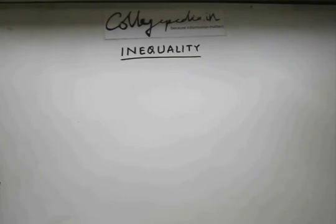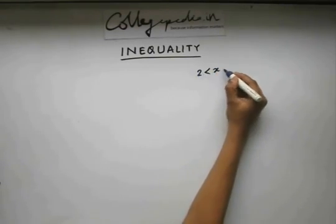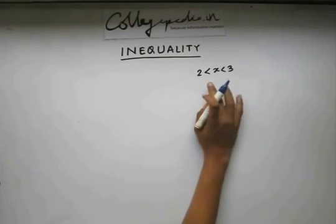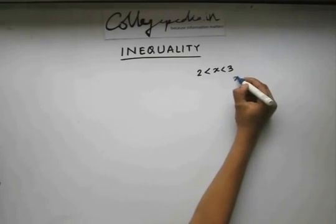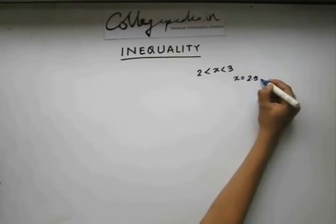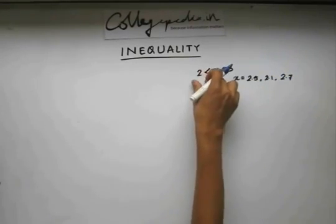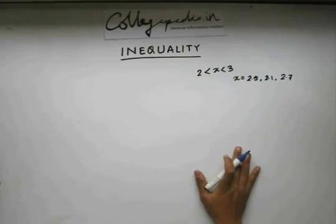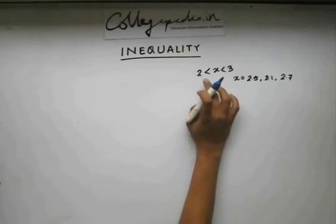When you talk of inequality, the first thing you need to know is what an interval is. You might have heard people saying that x lies in the interval 2 to 3 or x lies in the range 2 to 3. It means that x can take any value between 2 and 3 — x can be 2.5, 2.1, or 2.7. So, an interval is basically the range in which the value of x can lie.